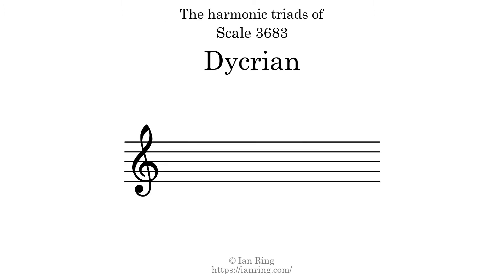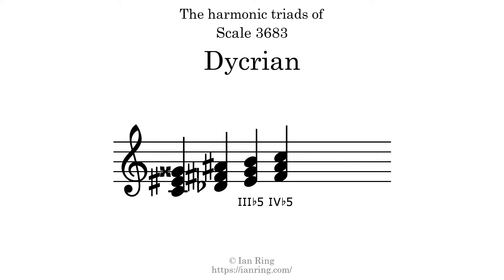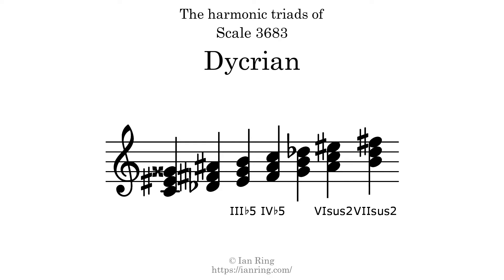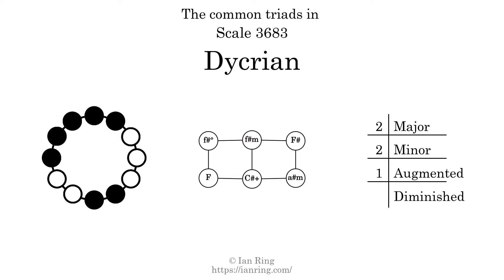Here are the harmonic triads present in this scale. The diagram in the center is a graph of parsimonious voice leading between triads. There are 2 major triads, 2 minor triads, 1 augmented triad, and 1 diminished triad.